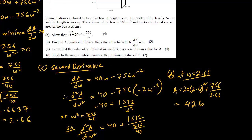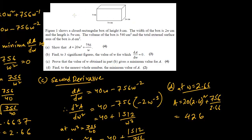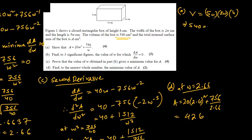Now for question A, we have to show that the surface area of this box — a cuboid — can be expressed only in terms of W. We are given that the volume is 540 cm³. Since volume = length × breadth × height, and the length is 5W, breadth is 2W, and height is H, we have 5W × 2W × H = 540, so 10W²H = 540. Therefore H = 540/(10W²) = 54/W².